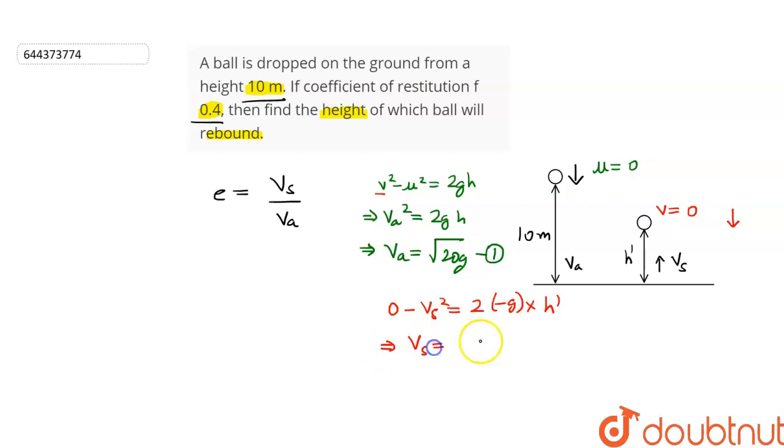So, VS comes out to be under root of 2GH dash. Let this be the second equation. Let's put the value of VS and VA in this equation and it is given that coefficient of restitution is 0.4.